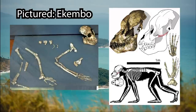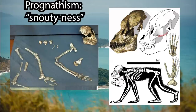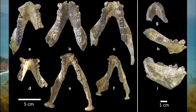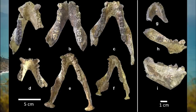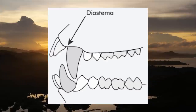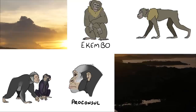Sporting a tailless form, Proconsul and its cousin Ekembo have gracile skulls with only moderate mid-facial prognathism and low alveolar prognathism. They have larger brains than their contemporaneous monkey kin, with incisors adapted for fruit consumption. They have canine teeth with a premolar honing complex that constantly keeps them sharp, and male canines are around 50% larger than female canines, perhaps suggesting a social system with high male competition.